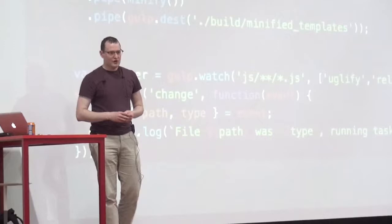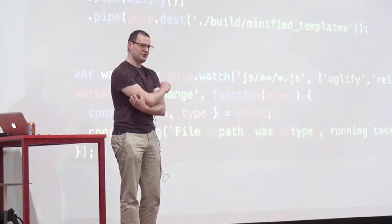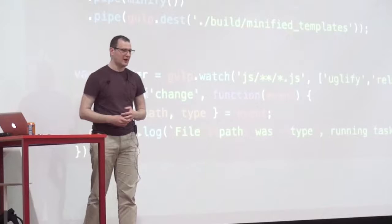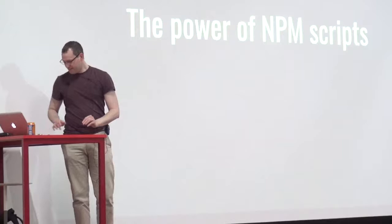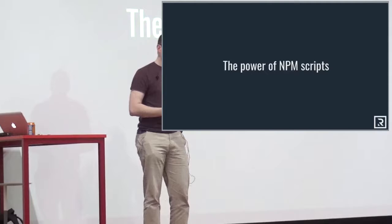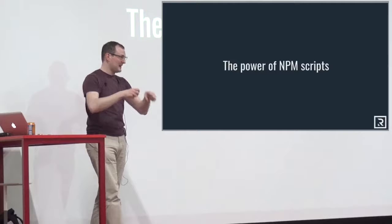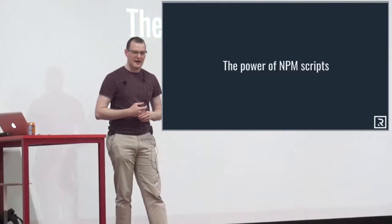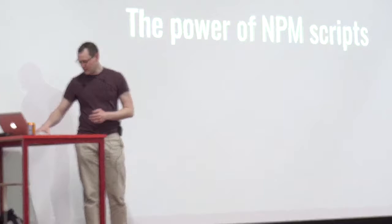So there's a move now to say: let's not use task runners. Let's use things closer to what we're used to — raw JavaScript inside the JavaScript ecosystem. And that's where the power of NPM scripts comes in. What NPM scripts allows us to do is peel back that abstraction and just run raw JavaScript.